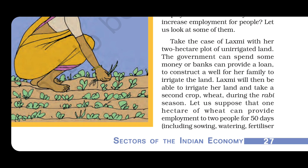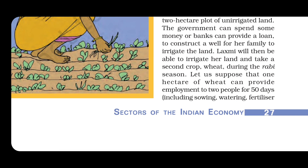Take the case of Lakshmi, with her two hectares of unirrigated land. The government can send some money or a bank can provide a loan to construct a well for her family to irrigate the land. Lakshmi will then be able to irrigate her land and take a second crop of wheat during the Rabi season.